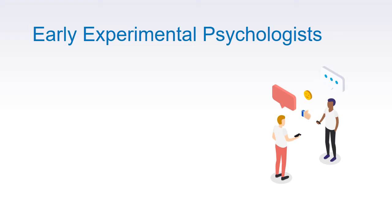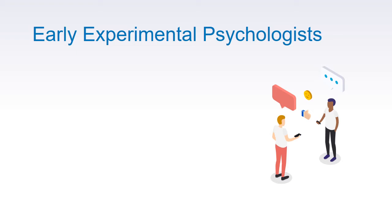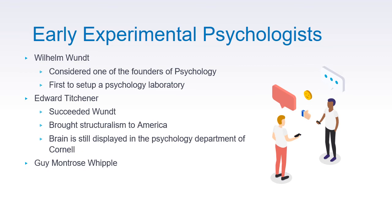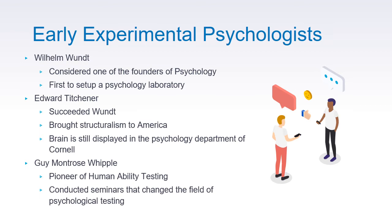We won't forget the famous Wilhelm Wundt, who is considered one of the founders of psychology because he was the first to set up a psychology laboratory in Leipzig, Germany. There is also Edward Titchener, who succeeded Wundt and brought structuralism to America — his brain is still displayed in the psychology department of Cornell. Guy Montrose Whipple pioneered human ability testing and conducted seminars that changed the field of psychological testing.